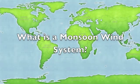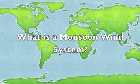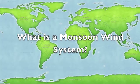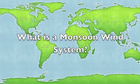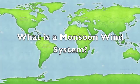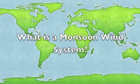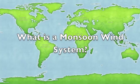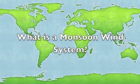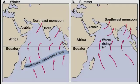Monsoon is traditionally defined as a seasonal reversing wind accompanied by corresponding changes in precipitation, but is now used to describe seasonal changes in atmospheric circulation and precipitation associated with the asymmetric heating of land and sea. Monsoons are large-scale sea breezes that occur when the temperature on land is significantly warmer or cooler than the temperature of the ocean. These temperature imbalances happen because oceans and land absorb heat in different ways.